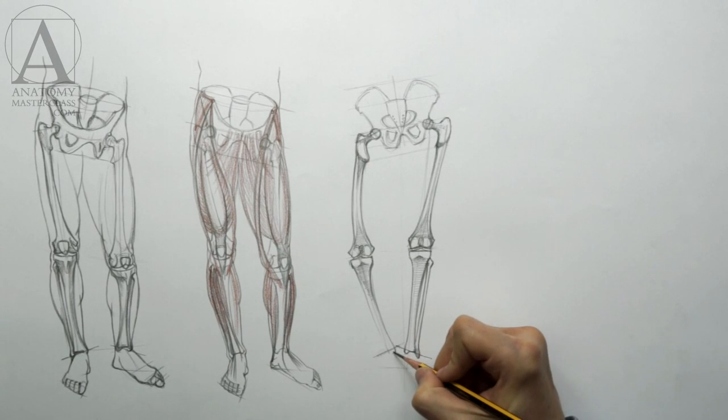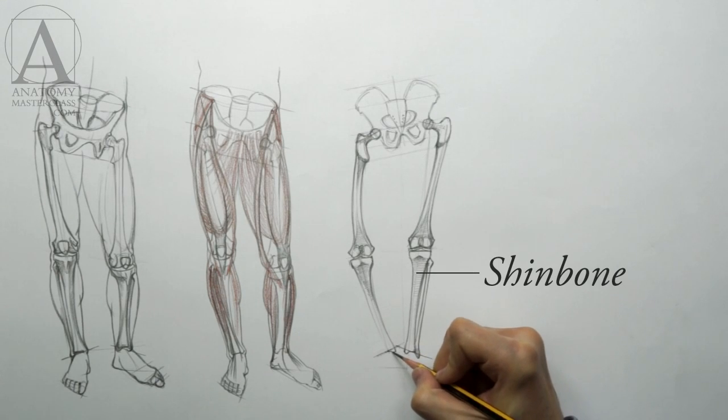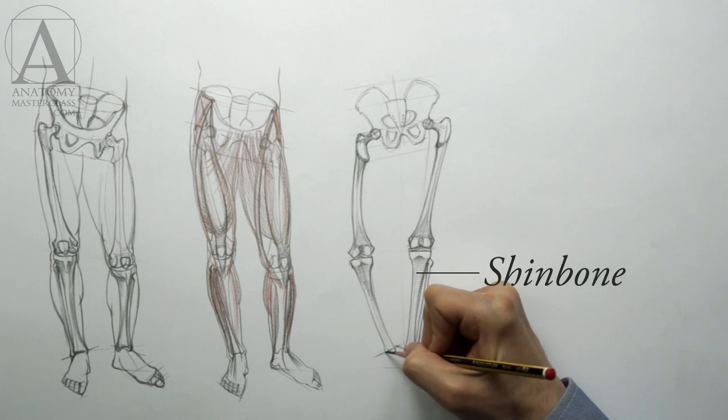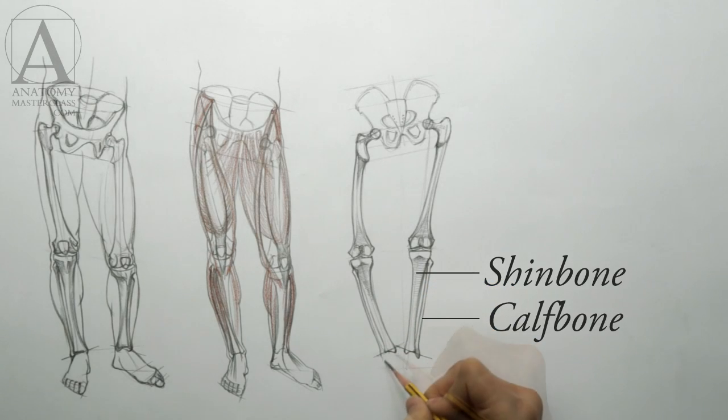There are two bones in the lower leg, the tibia or shin bone and the fibular or calf bone.